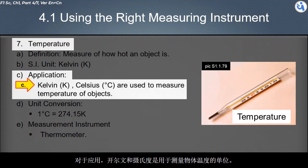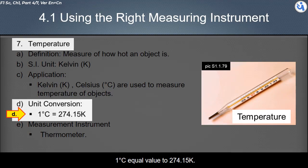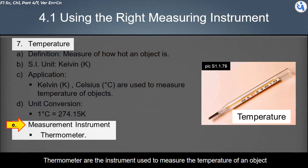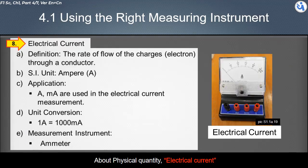For the unit conversion between Celsius and Kelvin, 1 degree Celsius equal value to 274.15 K. So 1 Kelvin equal value to 1 divided by 274.15 degree Celsius. Thermometer are the instrument used to measure the temperature of an object.